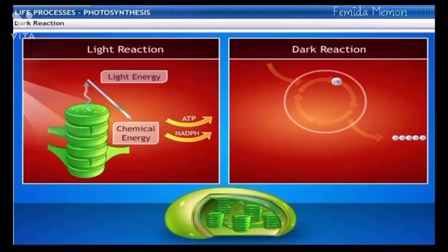By the end of dark reaction, plants prepare glucose. This glucose is used immediately by the cell or stored in the form of starch.